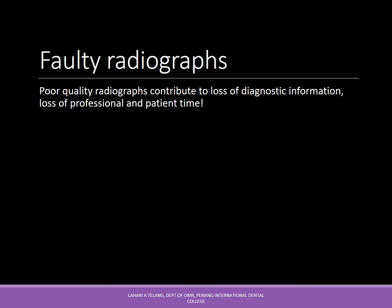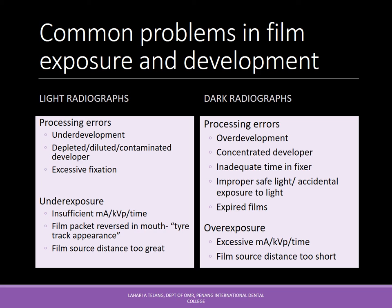Poor quality radiographs contribute to loss of diagnostic information and loss of professional and patient time. Common problems include light radiographs — caused by processing errors such as underdevelopment, depleted or contaminated developer, excessive fixation; underexposure from insufficient current, voltage, or time; reversed film packet in the mouth causing a tire-track appearance; or film-source distance being too great. Dark radiographs can result from processing errors like overdevelopment, concentrated developer, inadequate fixer time, improper safe light, accidental light exposure, or expired films. Overexposure causing dark radiographs results from excessive current, voltage, time, or film-source distance being too short.